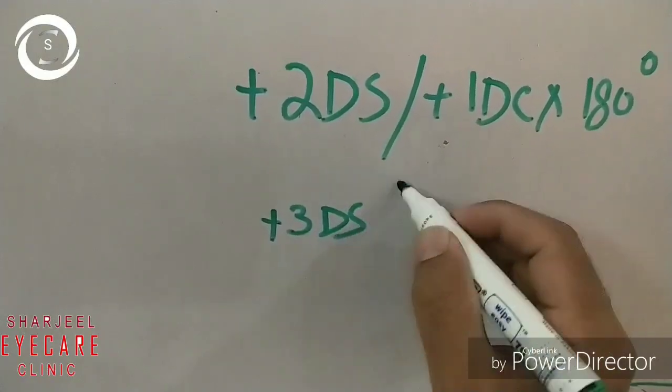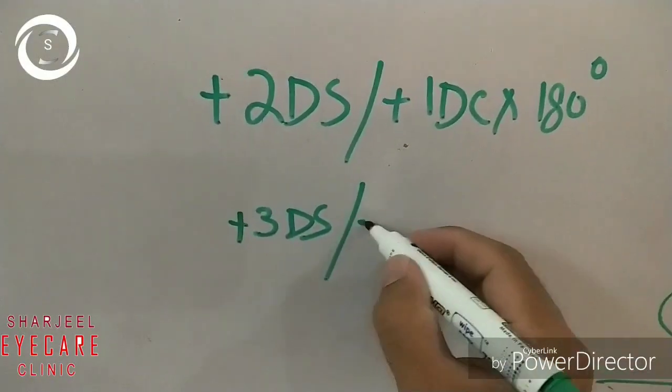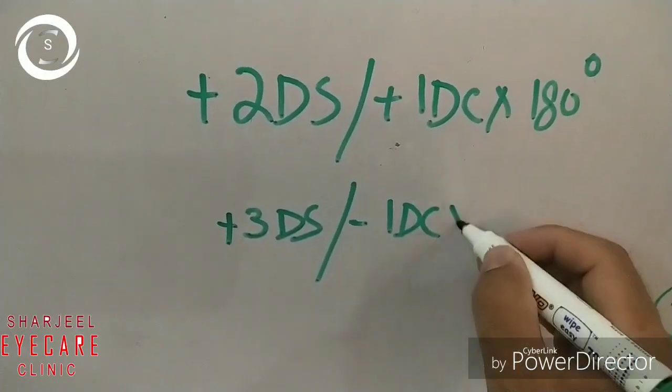Change the sign of the cylinder - it will become minus 1 at 90 degrees.